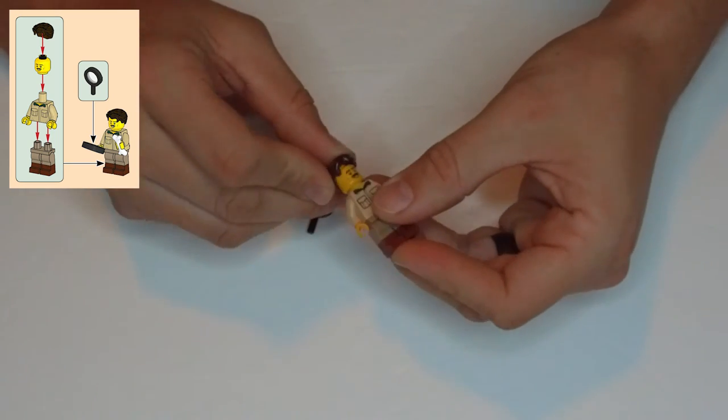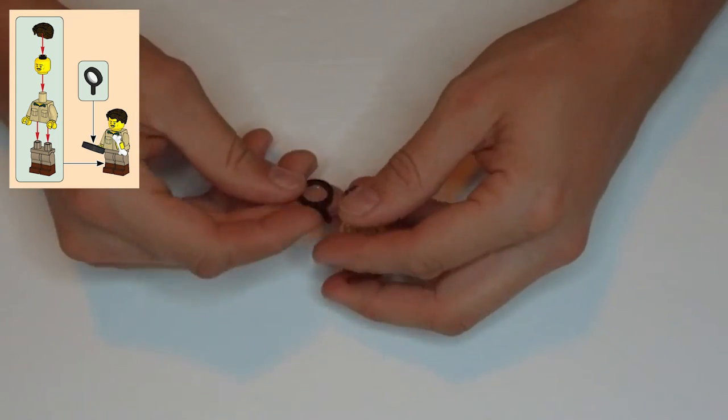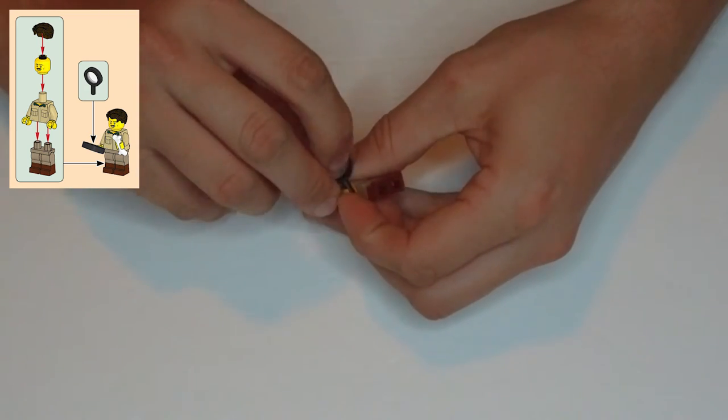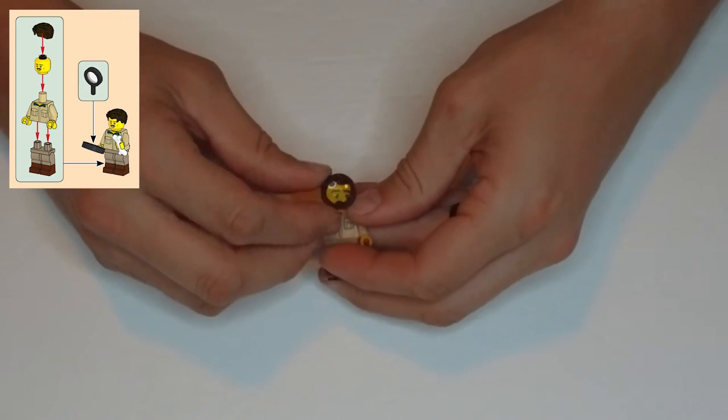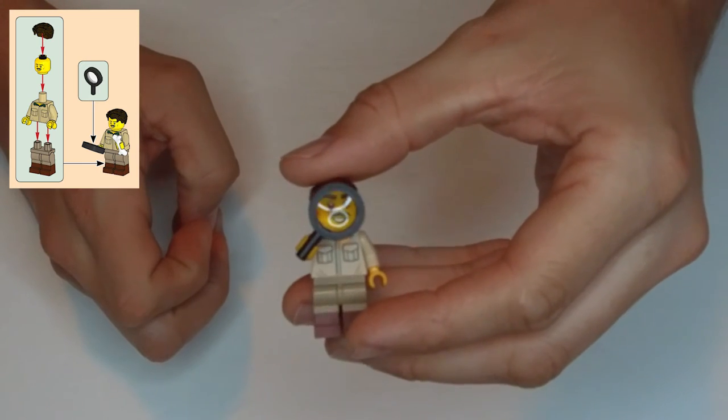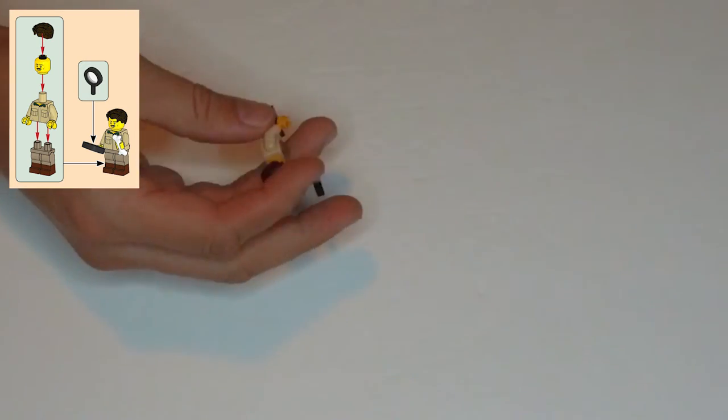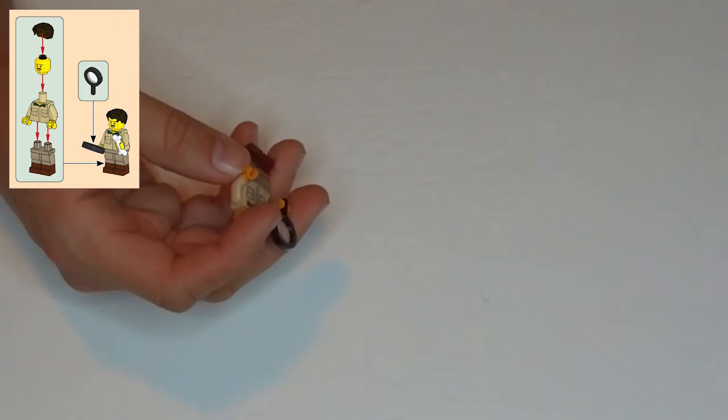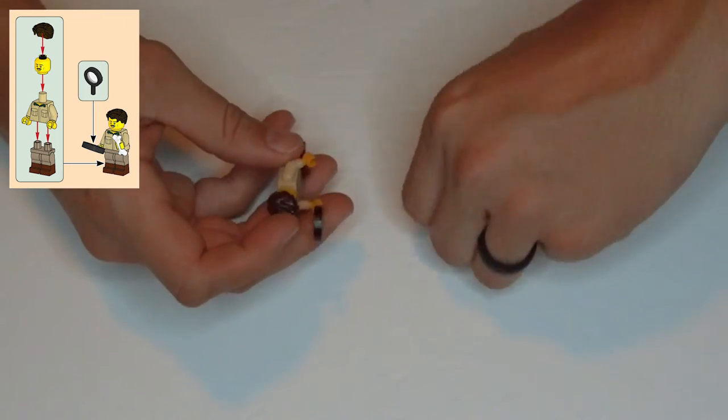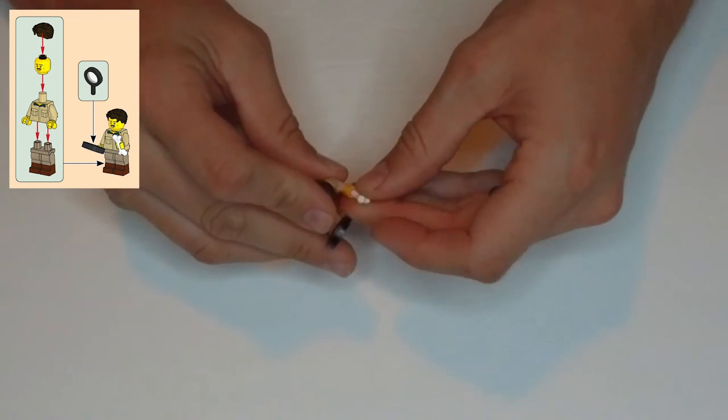And then he also has this magnifying glass. It's a real magnifying glass, ooh. Okay, so he also is holding the dinosaur bone. I'm assuming it's a dinosaur bone, it looks just like a dog bone. Anyway, that's that.